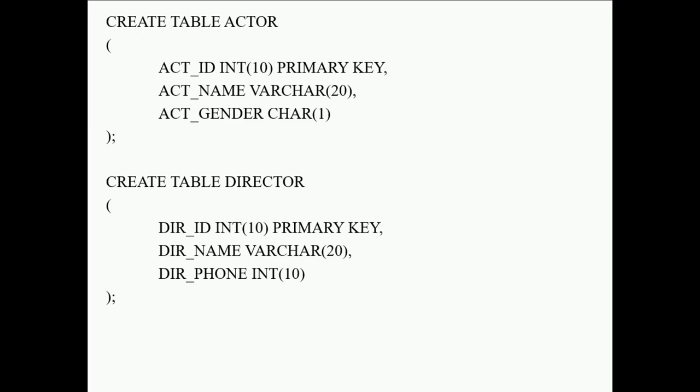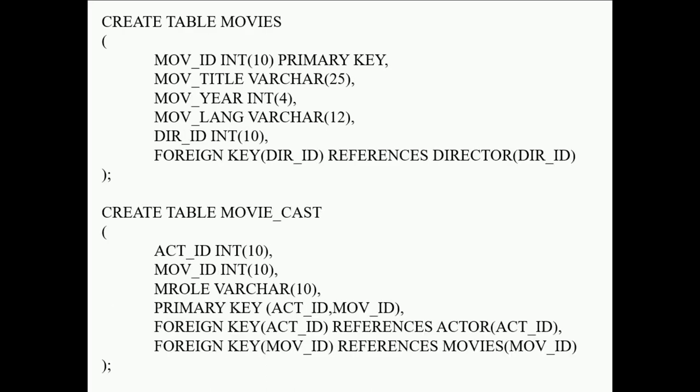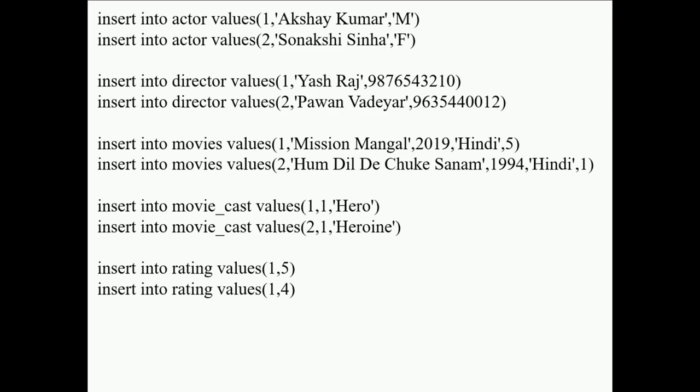To create the tables: actor has actor_id (primary key), actor_name, and gender. Director has director_id (primary key), director_name, and phone number. Movies has movie_id (primary key), title, year, language, and director_id as a foreign key. Movie cast has actor_id and movie_id as a composite primary key — both are also foreign keys — along with role. Rating has movie_id and review_stars as a composite primary key, since each movie can have multiple reviews, and movie_id is also a foreign key. Based on this table structure, values have been inserted for actor, director, movies, movie cast, and rating.